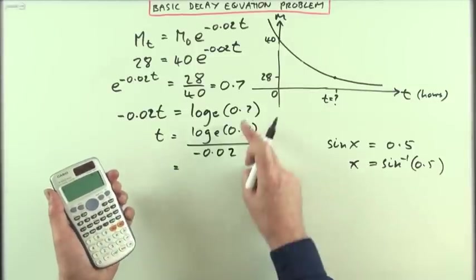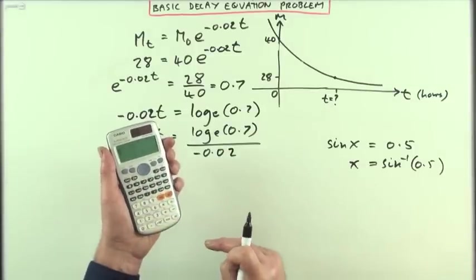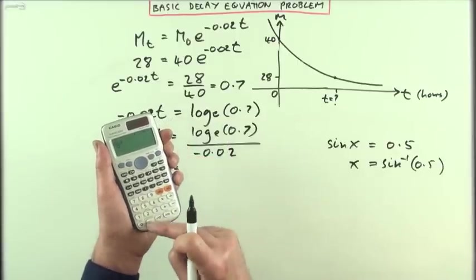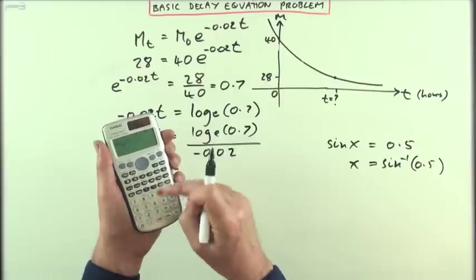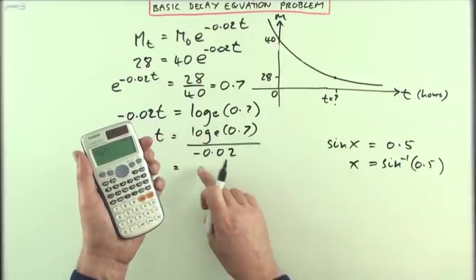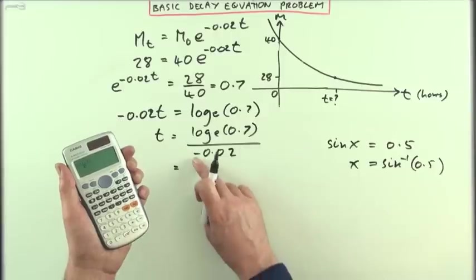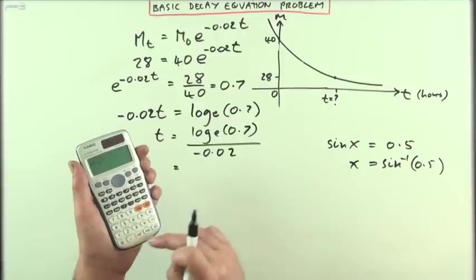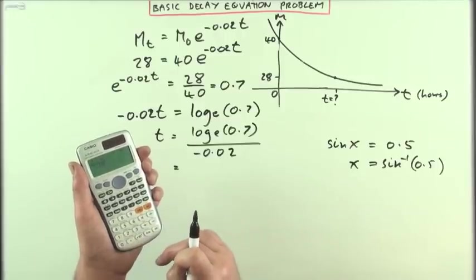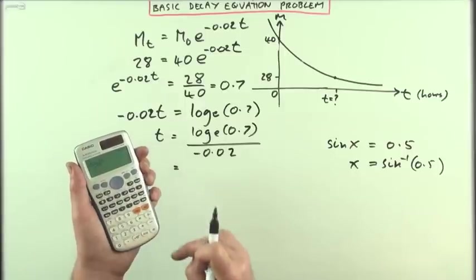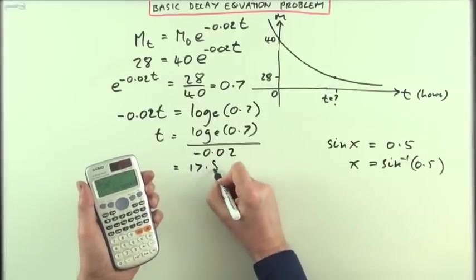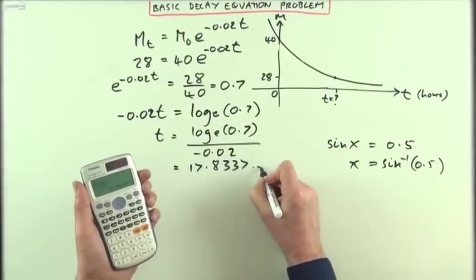So into your calculator. It's a fraction. You can use that fractions button if you like. Log base e is the ln, again, of 0.7. Remember to close your bracket so you might get a syntax error. Divided by negative 0.02. That's a negative, not a subtract. So use the negative button, 0.02. Just safely take it out of the way. Press equals. And you get 17.8337 hours.